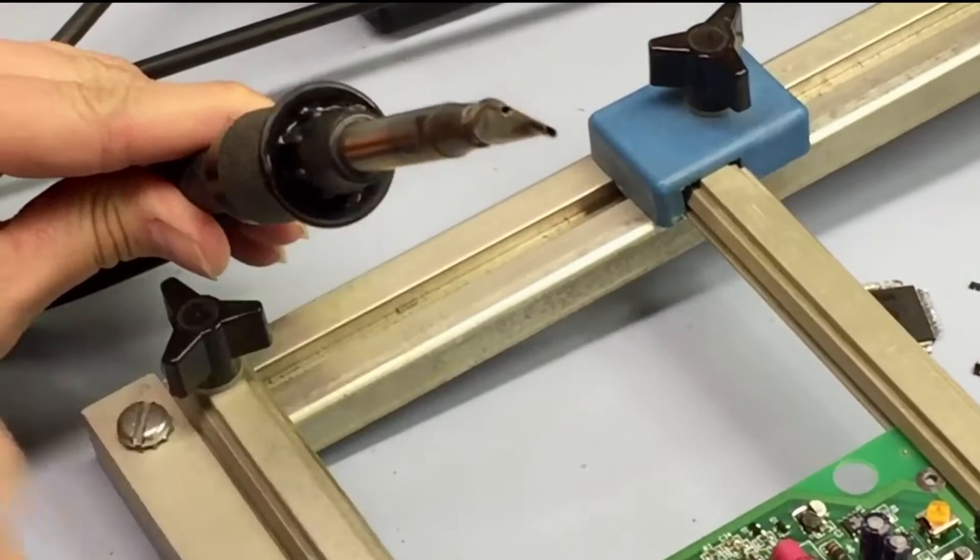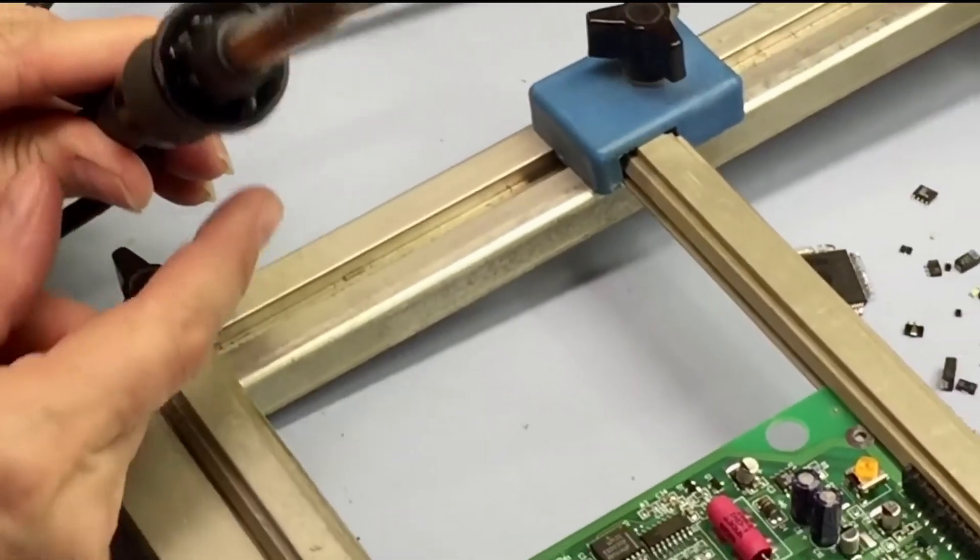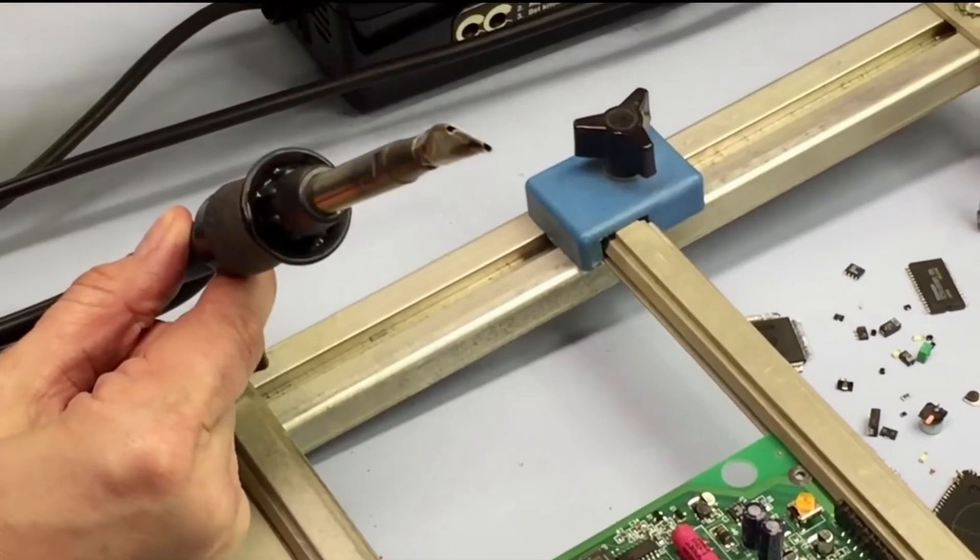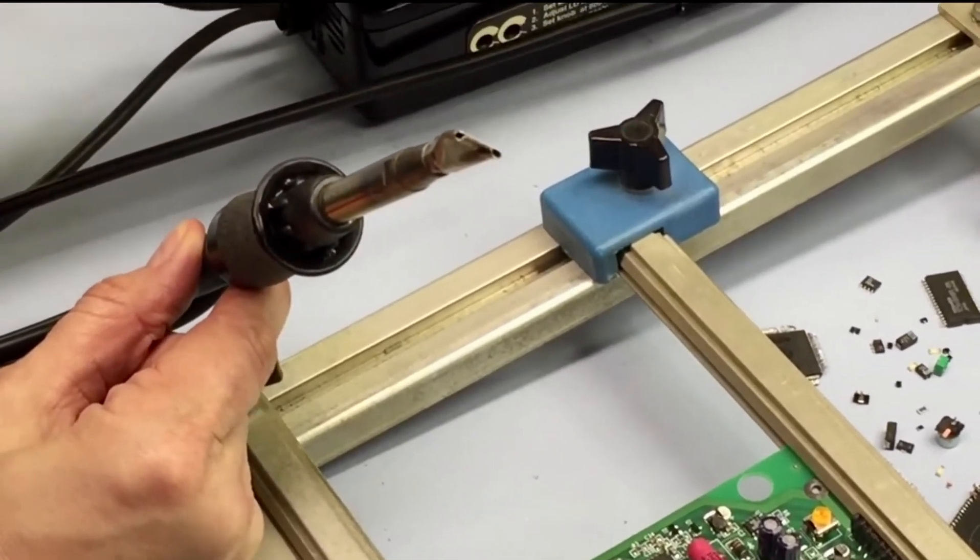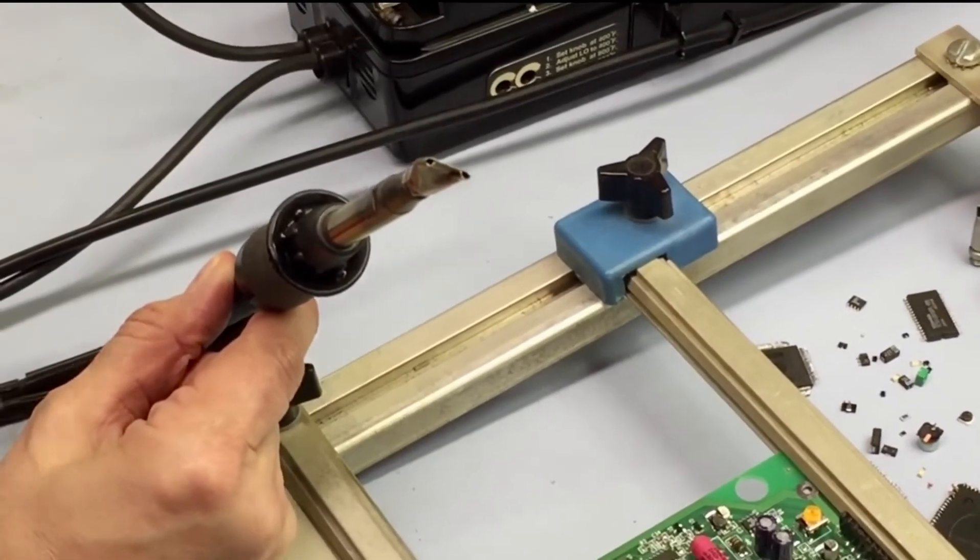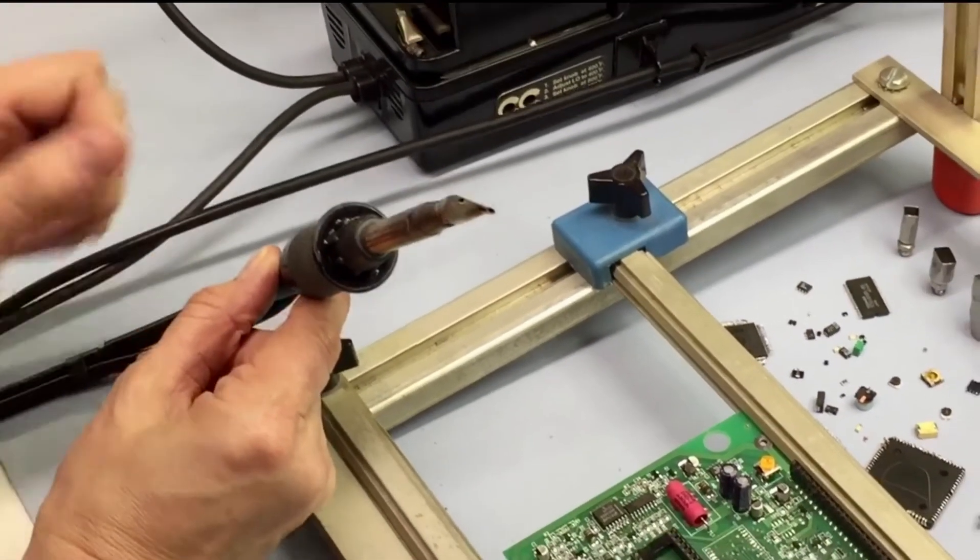And because of the restricted air, what I usually do is I turn up the pressure on the air. We're going to go from six to about ten. And that will help us reflow that solder a little bit easier.